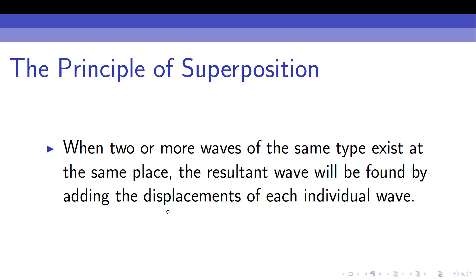So if we've got just two waves and at some particular point we've got the peak of both of them lined up, then we will get an even larger peak at that point. If both the troughs are lined up, we will get an even deeper trough. If we've got a peak lined up with a trough, then when we add those displacements we'll get back to zero. So if we've got a plus one displacement and a minus one displacement, what we see there is actually zero displacement. And this can apply to three waves, four waves, five waves — however many waves you've got of the same type, in the same place, at the same time.